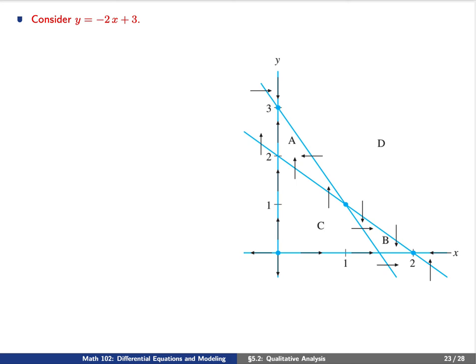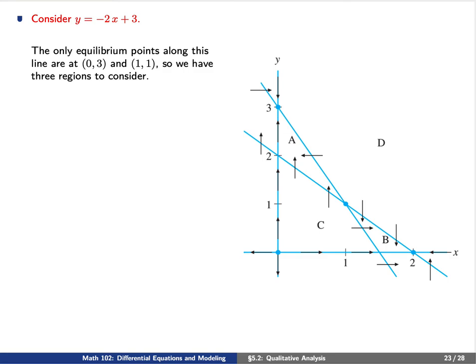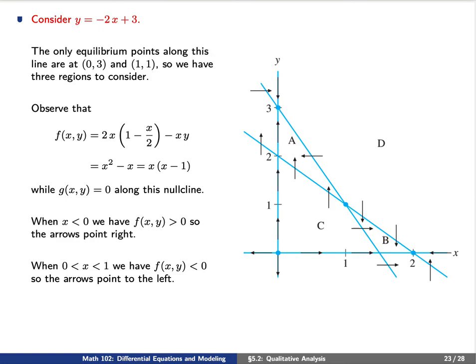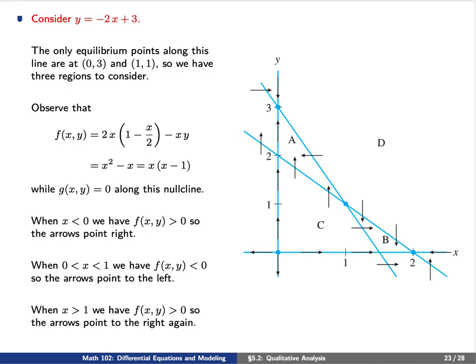Finally, consider the last y-nullcline, y equals negative 2x plus 3. The equilibrium points along this line are (0,3) and (1,1). We plug this back in for f, and of course g equals 0 on a y-nullcline. When x is to the left of (0,3), f is positive so arrows point to the right. When x is between (0,3) and (1,1), f is negative so arrows point to the left. When x is to the right of (1,1), f is positive so arrows point to the right again.